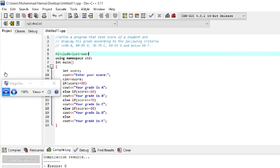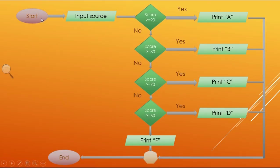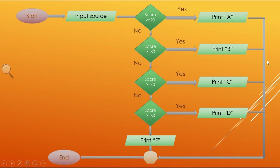Now let us look at the flowchart of this program. We start the program, input the score from the user. If the person scored 90 or above, the first condition (score >= 90) is true — it prints grade A and terminates, skipping all remaining conditions. If the person scored 80 or above, the first condition is false, so it goes to the second condition which becomes true — it prints grade B and terminates.